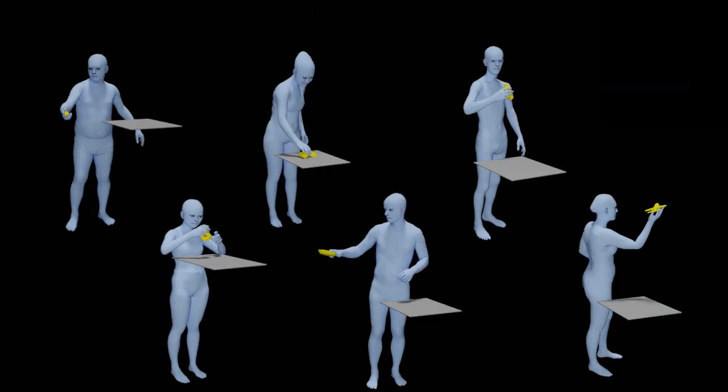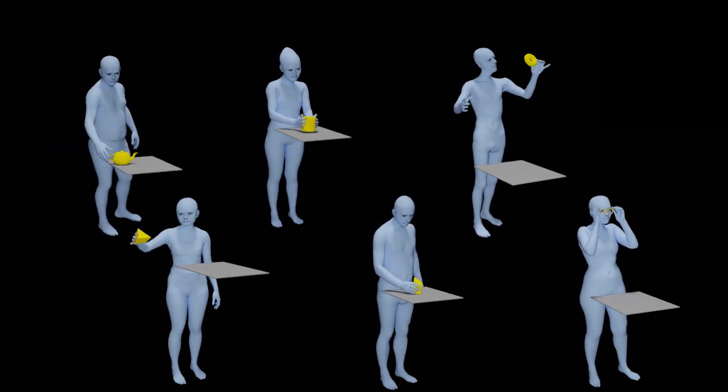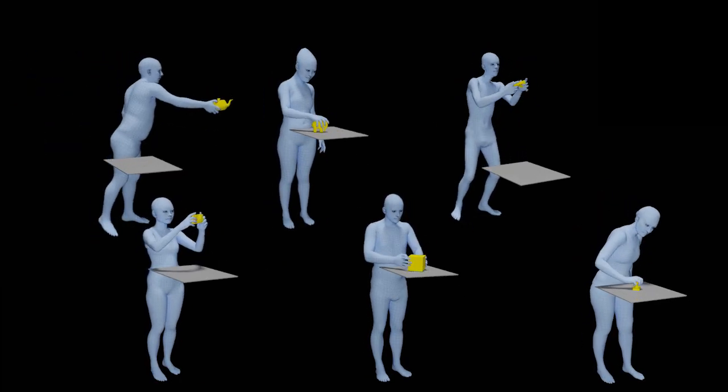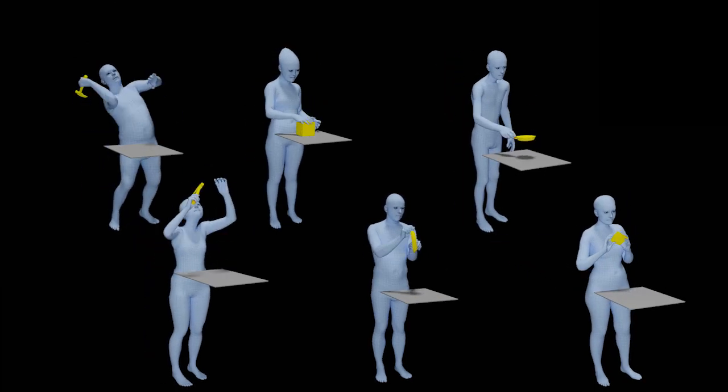GRAB contains 10 subjects interacting with 51 everyday objects of varying size and shape. Uniquely, it reconstructs 3D meshes for both the full body human motion and the object.